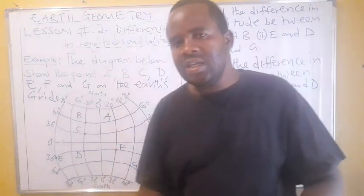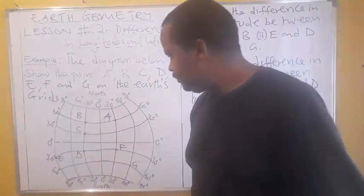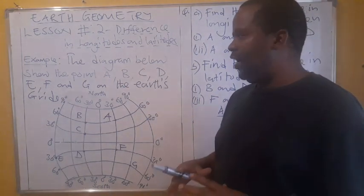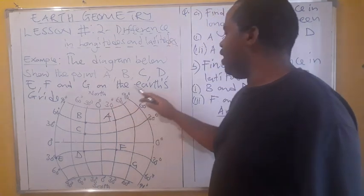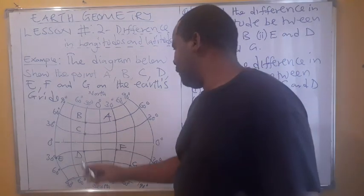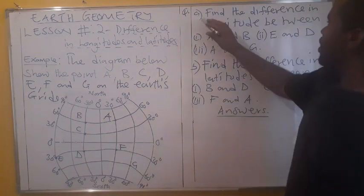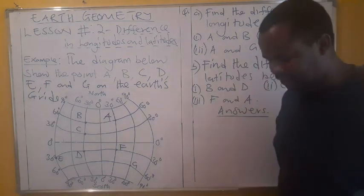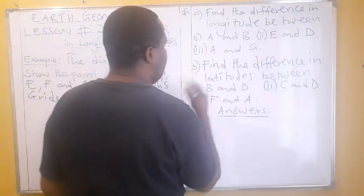You must understand what latitude and longitude are, as that will help you find their difference. Now let's look at an example. The diagram below shows points A, B, C, D, E, F, and G on the surface of the earth. The first question is about finding the difference in longitude, and the second is about finding the difference in latitudes.